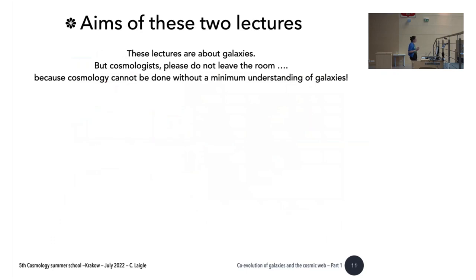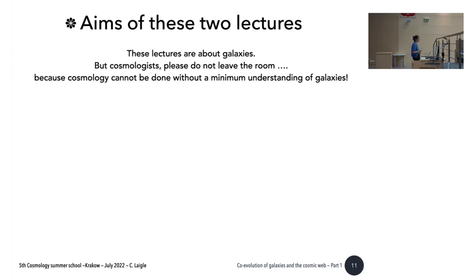These lectures are about galaxies. Many of you are not really working on galaxies but on cosmology — but stay here, because if we want to check that the cosmological model is correct, we need to rely on some tracer of the density field. Galaxies are one of the main tracers we can use, and to do that we need to understand galaxy bias.